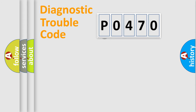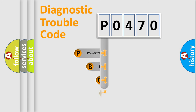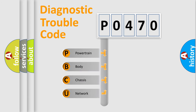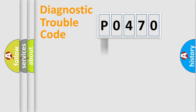First, let's look at the history of diagnostic fault code composition according to the OBD2 protocol, which is unified for all automakers since 2000. We divide the electric system of the automobile into four basic units: Powertrain, Body, Chassis, and Network. This distribution is defined in the first character of the code.